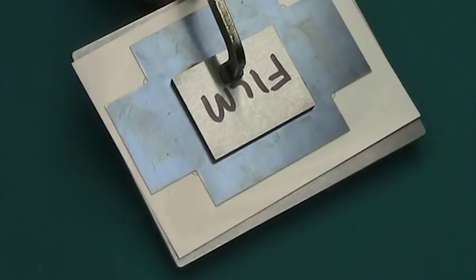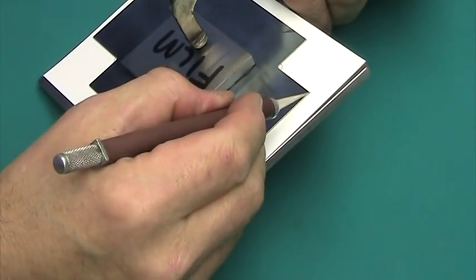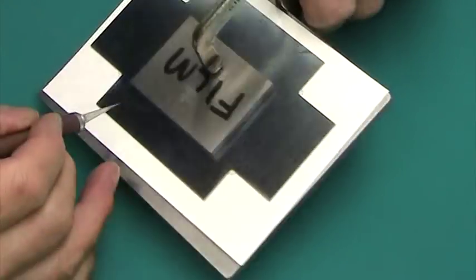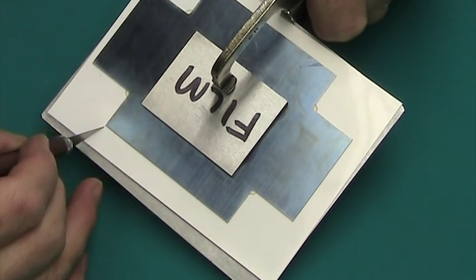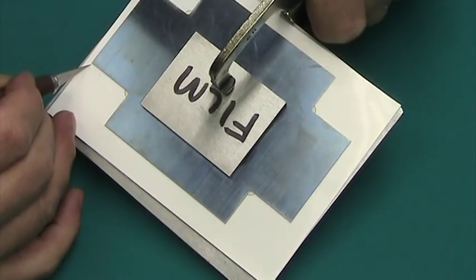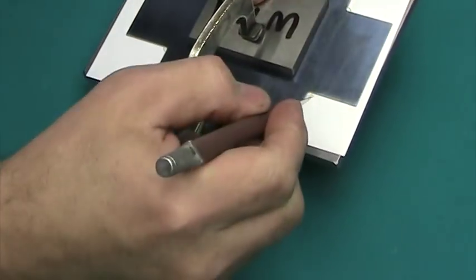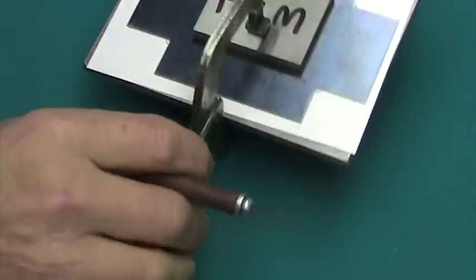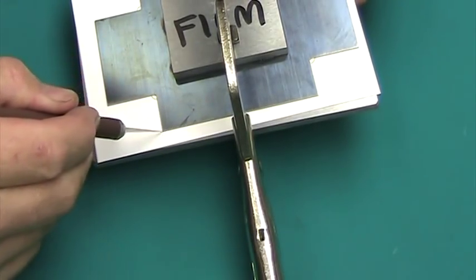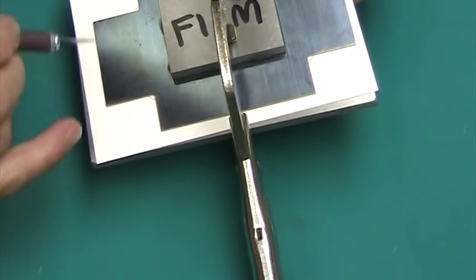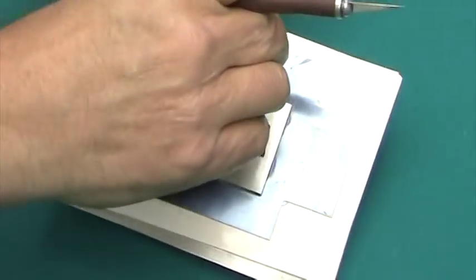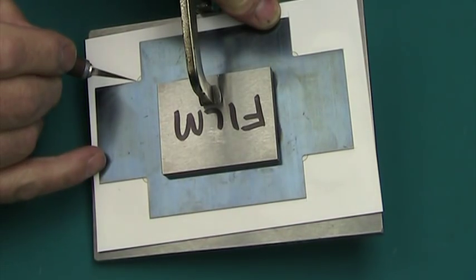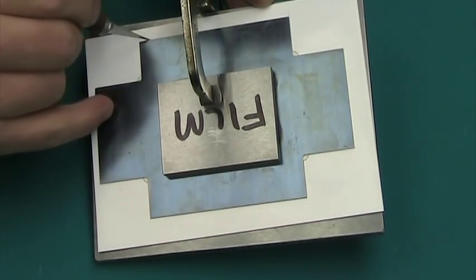So now the corners are done. I take our trusty X-Acto knife and we cut right through. You can get used to what the pressure is to go just through the film and not through the blank sheet. So even though I'm cutting directly on steel there, I'm actually not cutting into the steel. I'm also only going right to where the circle cut was.